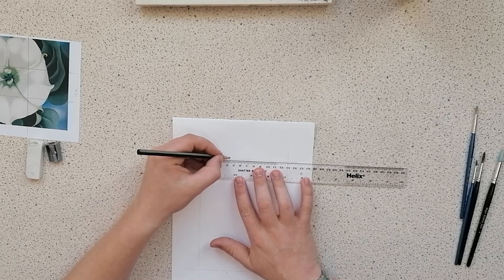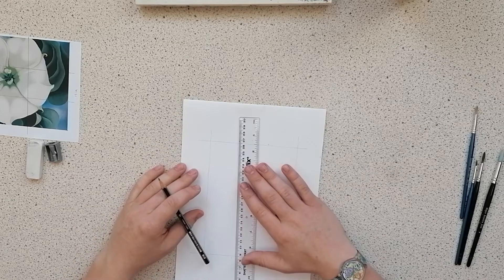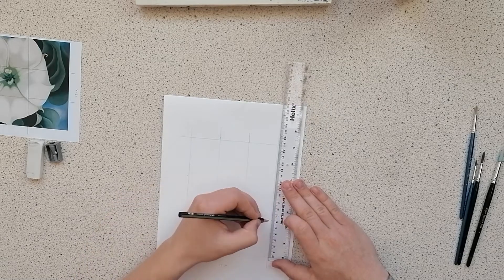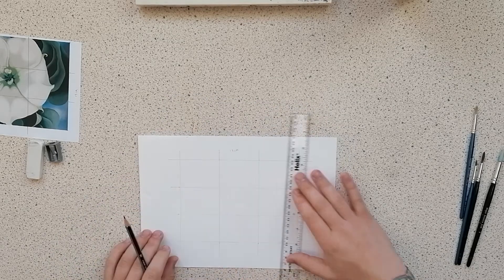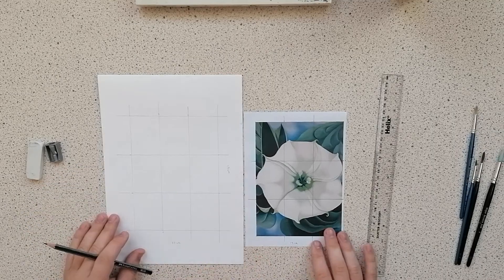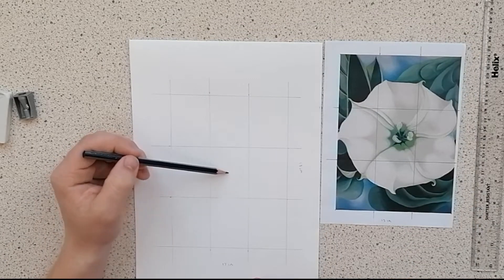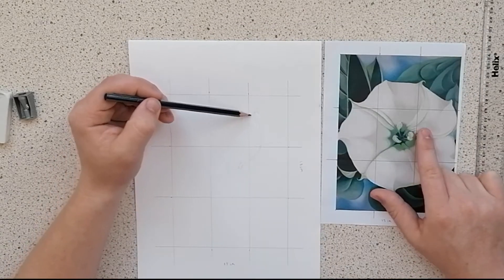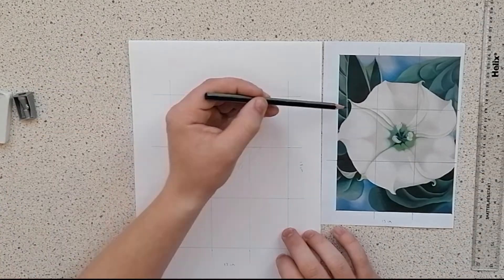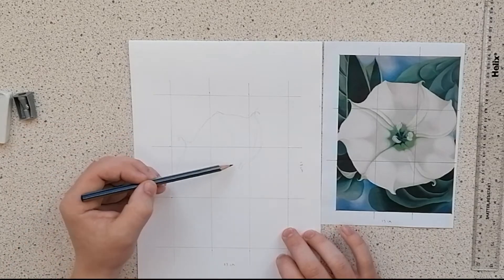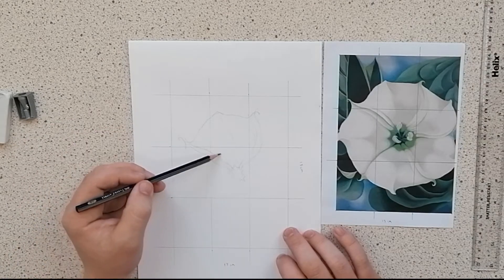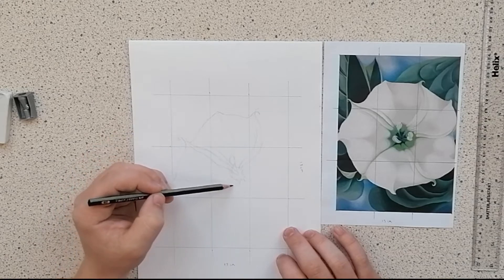So at this stage you may be wondering why have we drawn grids on our work, and the simple answer is it just helps us draw. We need to translate that image onto our own piece of paper, so by creating a grid we've actually created a map where we can draw the detail from the photograph onto our drawing accurately with the correct proportions.